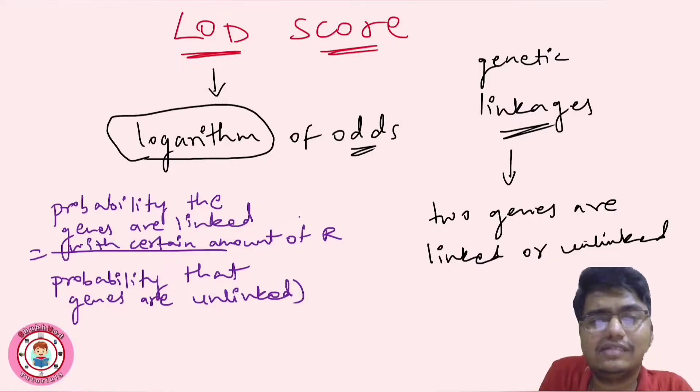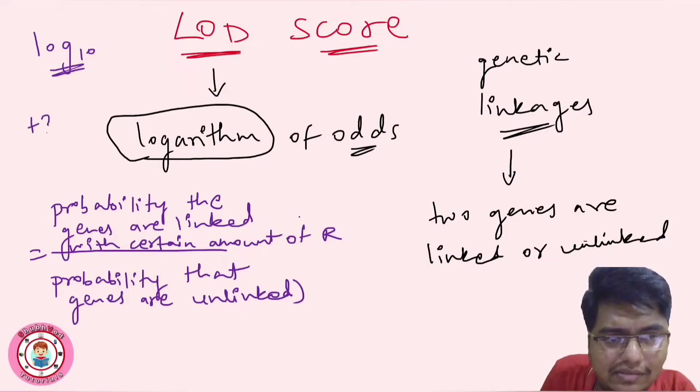So this is how it is calculated. Then what are the values when we will understand the genes are linked or unlinked? So this is calculated in terms of log, right? Log to the base 10. When the value is plus 3 or more, it is said as genes are linked.